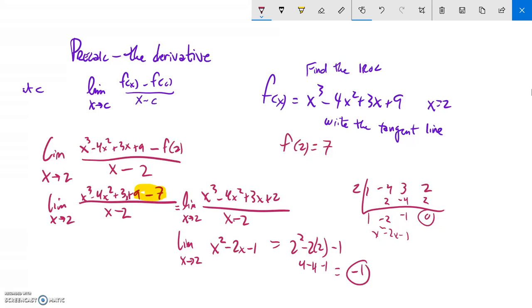Is negative 1. So this function is that steep at the point (2,7). So this is the instantaneous rate of change. Here's my derivative.